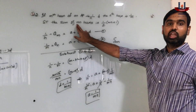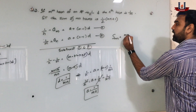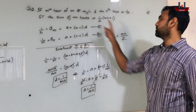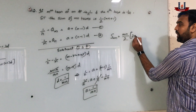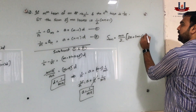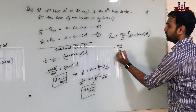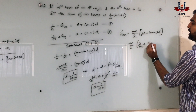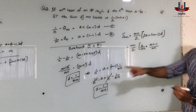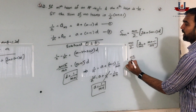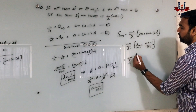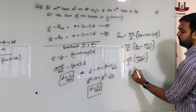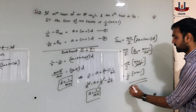Now let's find the sum of mn terms. The total number of terms is mn, so S(mn) equals mn by 2 into [2a plus (mn minus 1) into d]. Substituting a equals 1 by mn and d equals 1 by mn: this becomes mn by 2 into [2 by mn plus (mn minus 1) by mn]. Simplifying inside the brackets: (2 plus mn minus 1) by mn equals (mn plus 1) by mn. So mn by 2 times (mn plus 1) by mn — the mn cancels — and we end up getting half times (mn plus 1) as the sum of mn terms.